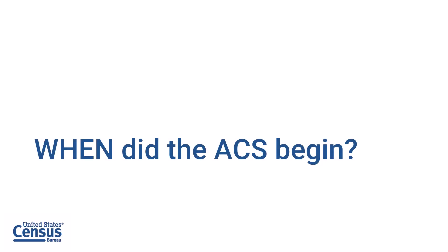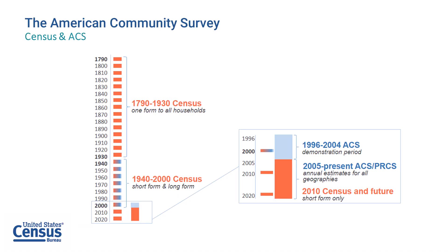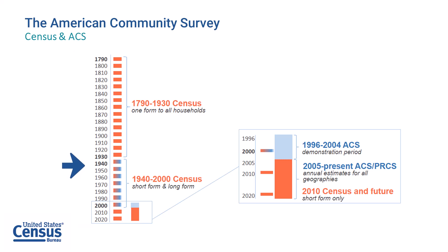When did the ACS begin? The first census of the United States was conducted in 1790 and occurred every 10 years, with one form being used to collect data from all households through 1930. From 1940 to 2000, the decennial census — the name for the census conducted every 10 years — contained a short form to collect data from all households and a long form that was used to collect data from a sample of households.